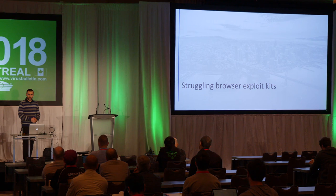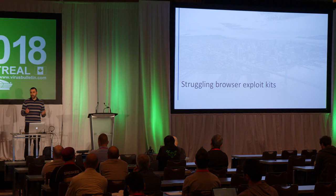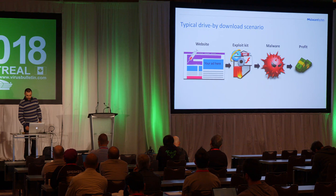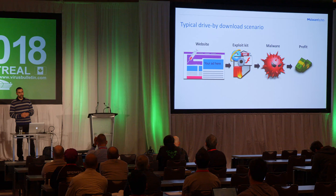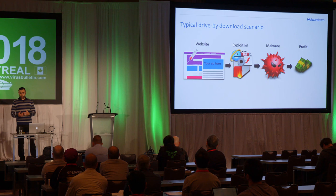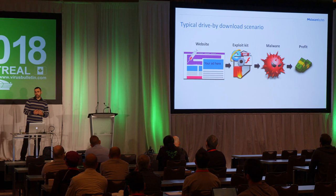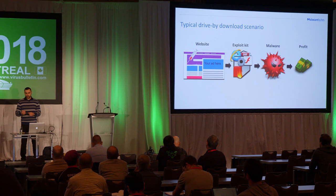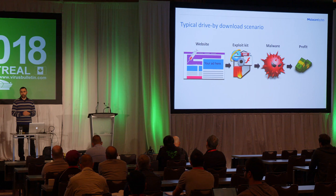Let's talk about browser exploit kits. The typical drive-by download scenario — a very simple flowchart: you have a website that has been injected or is showing a malicious advert. There's some kind of traffic redirection, maybe a TDS involved, redirecting your browser to an exploit kit landing page. On that page, there are vulnerabilities for your browser or one of its plug-ins that try to exploit that vulnerability to download malware. The payout is once the malware is installed — that's how criminals make money, per install, per victim.